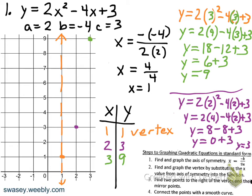Now we're going to reflect these points. The point (3, 9) is 2 units away from the axis of symmetry, so 2 units away on the other side gives us the point (negative 1, 9). Reflecting (2, 3): that's 1 unit away, so 1 unit on the other side gives us the point (0, 3). Now we'll connect those with a smooth curve.